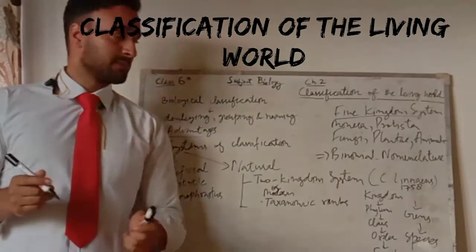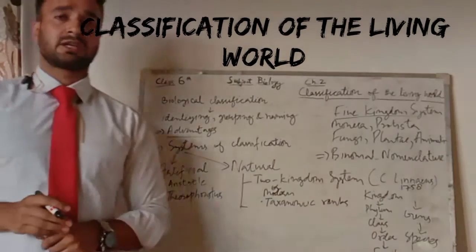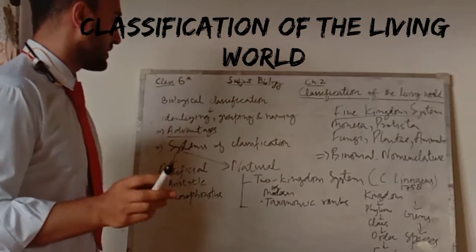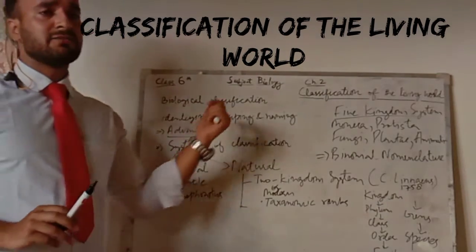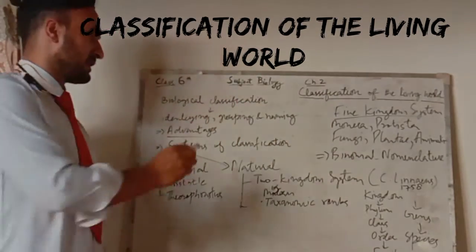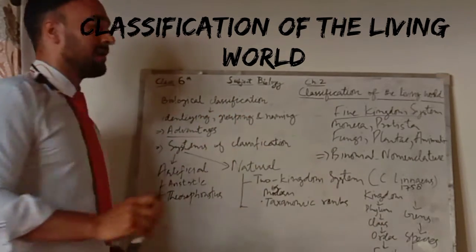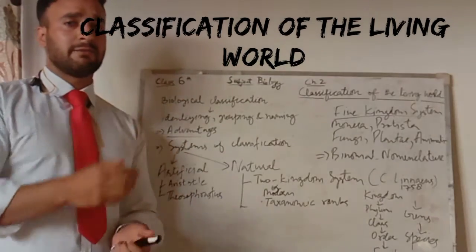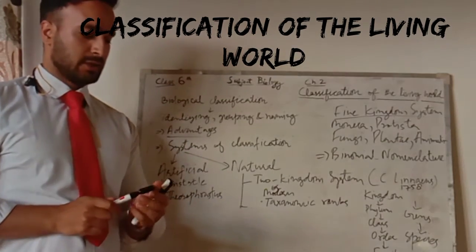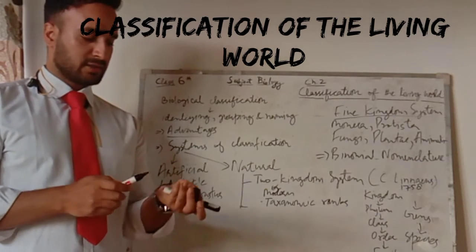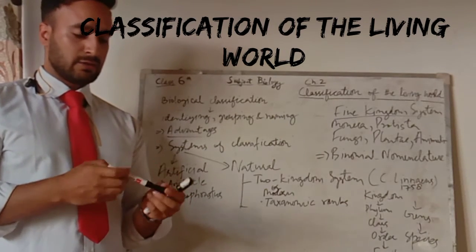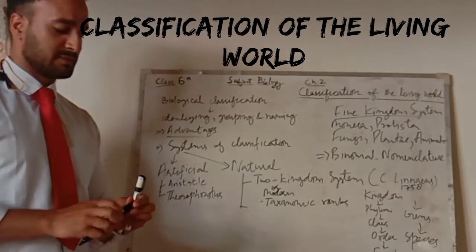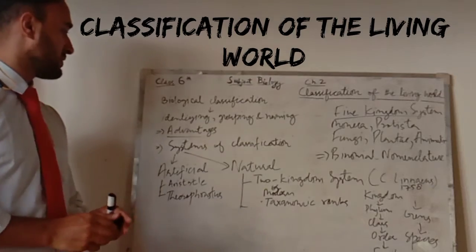So there is a system called biological classification. What is biological classification? Biological classification is the identifying, grouping, and naming of living organisms. First we identify a living organism, then we group it into its correct position, and then we name it. Identifying, grouping, and naming of living organisms is called biological classification.